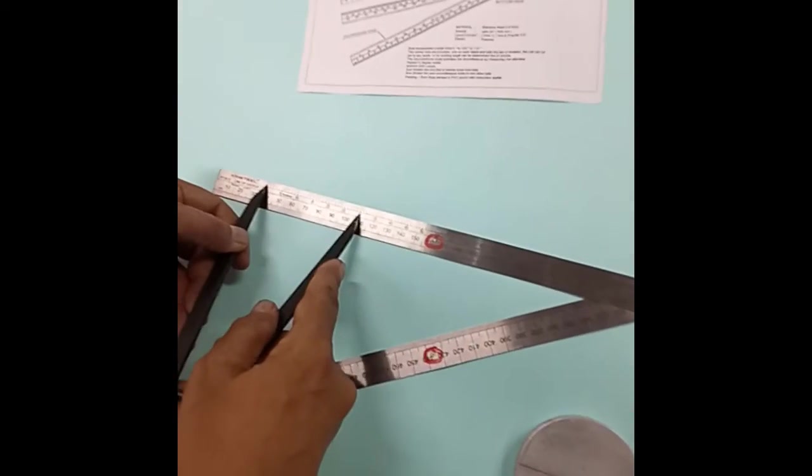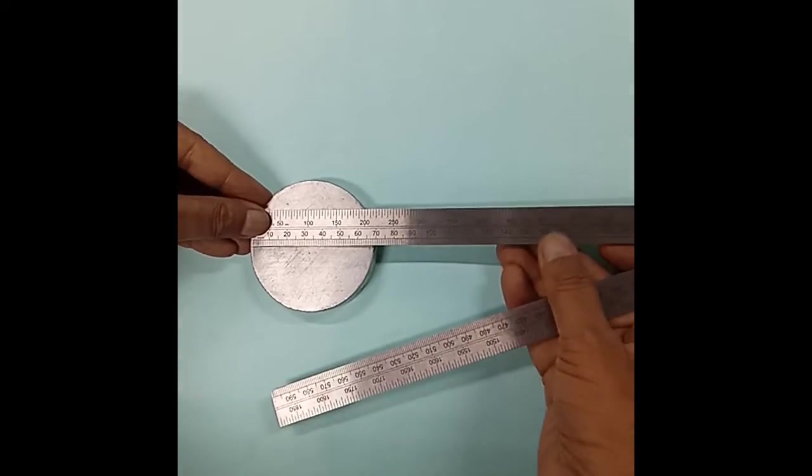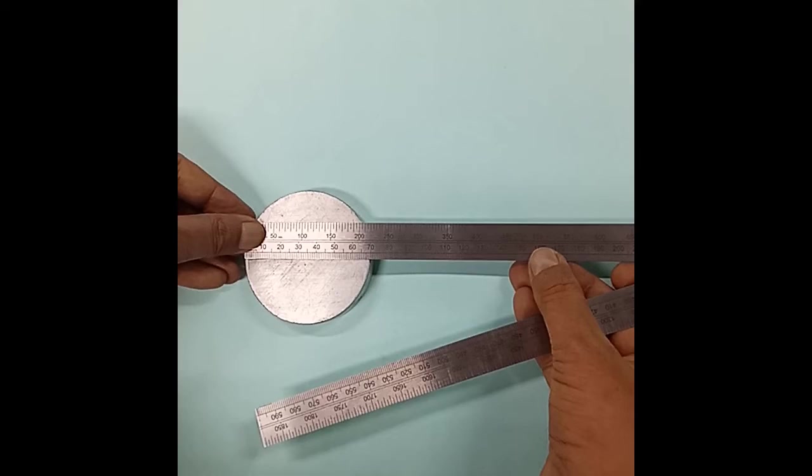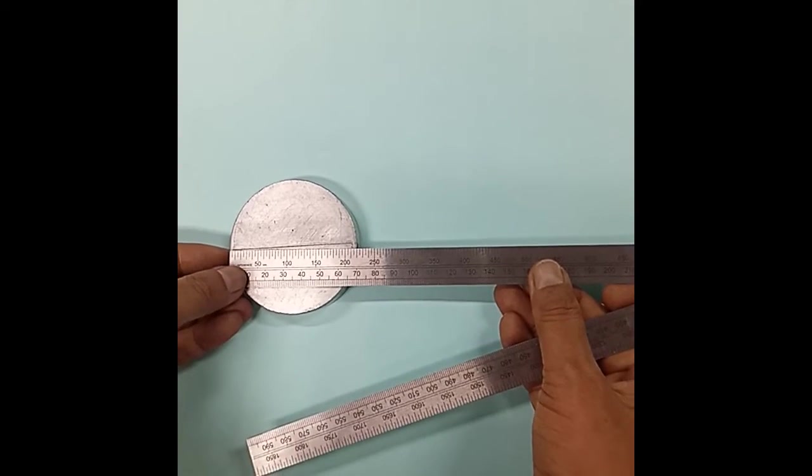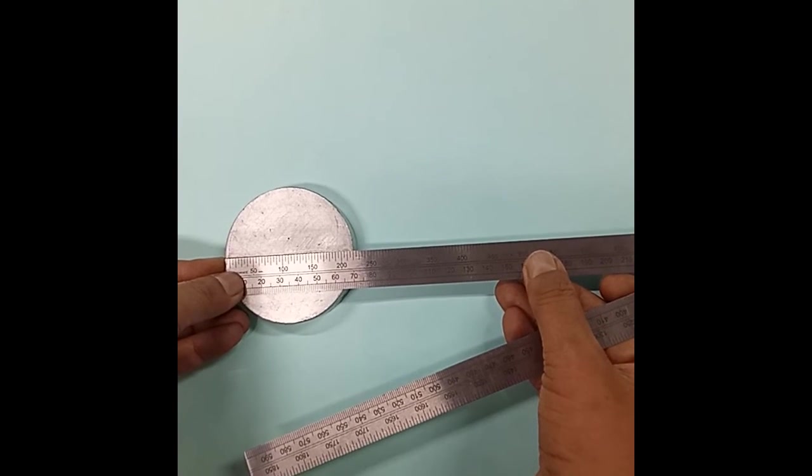On the backside scale you can check linear dimensions. This is a 70mm diameter, and you can convert it to the perimeter or circumference, which is 220mm.